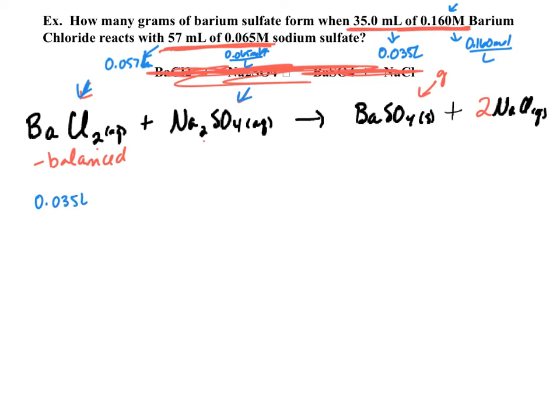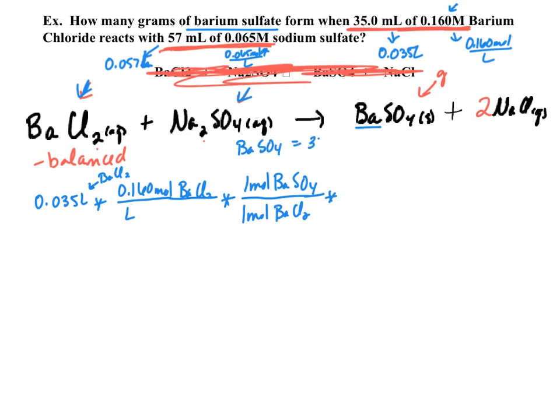Individually we need to figure out how many grams of barium sulfate you can make given both of the individual values. We have to convert milliliters to liters—that is 0.035 liters. And remember that 0.160 molar means we have 0.160 moles per liter. And the same thing over here with our sodium sulfate: 57 milliliters is 0.057 liters and the 0.065 is 0.065 moles per liter. I'm going to start with barium chloride.